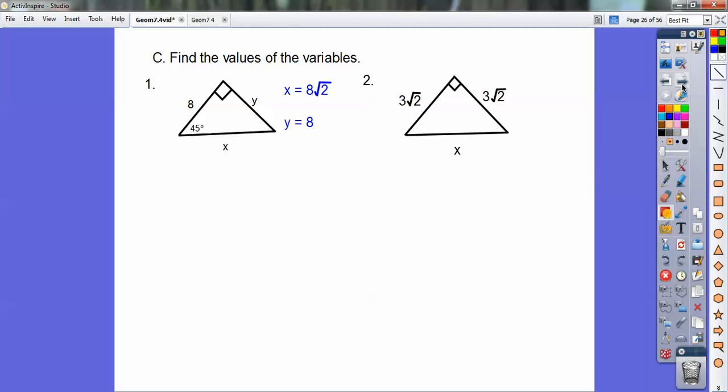Here's number 2. This time they give you that both legs are 3 root 2s. Well, that means they're isosceles, they're equal to each other. So the hypotenuse is root 2 times the 3 root 2, and root 2 times root 2 is 2. 3 times 2 is 6.